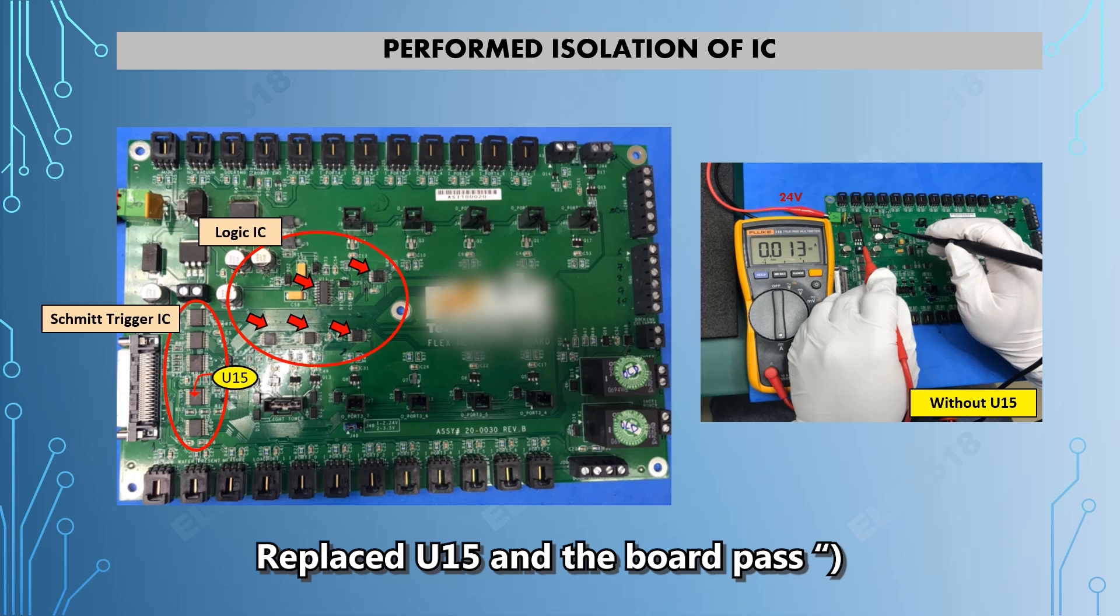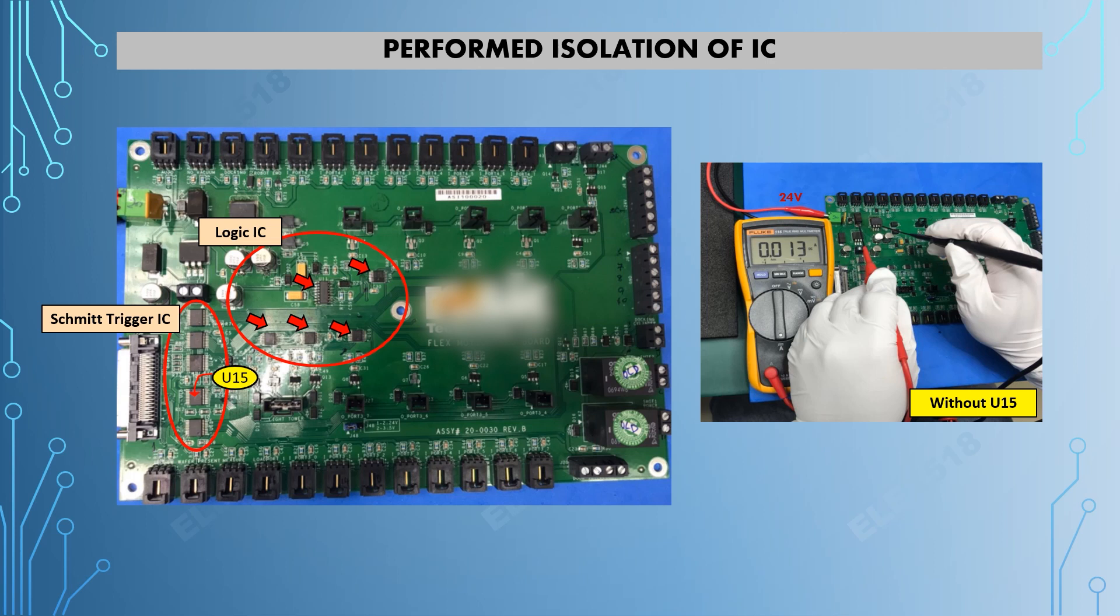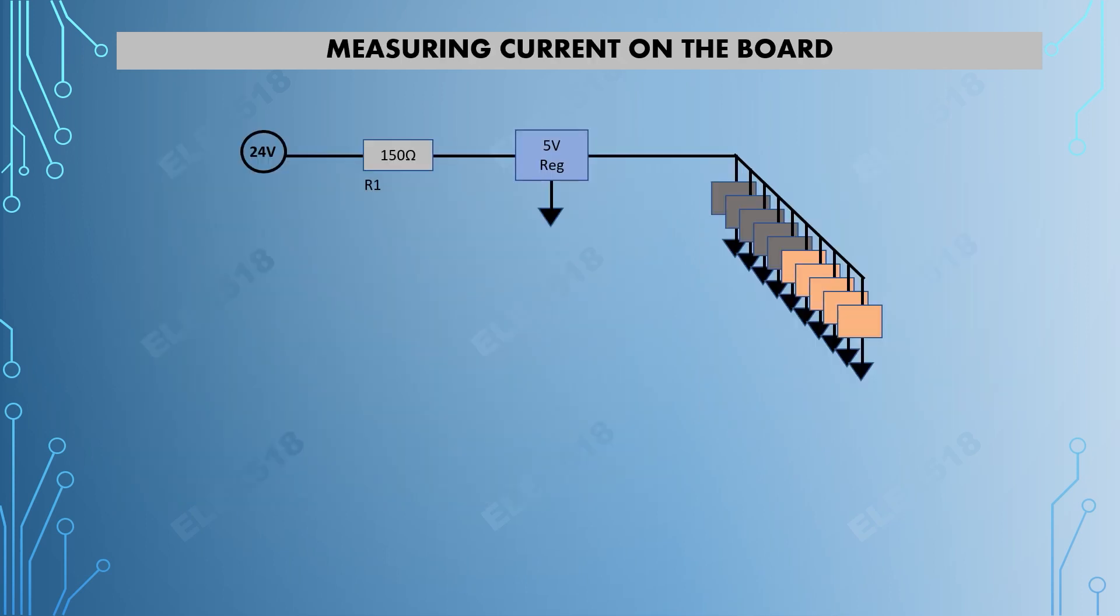So I replaced U15 with a new component, and voila, the current maintained at 13 milliamps and the board passed when installed back into the system. Thanks to the isolation method, it saved the day.